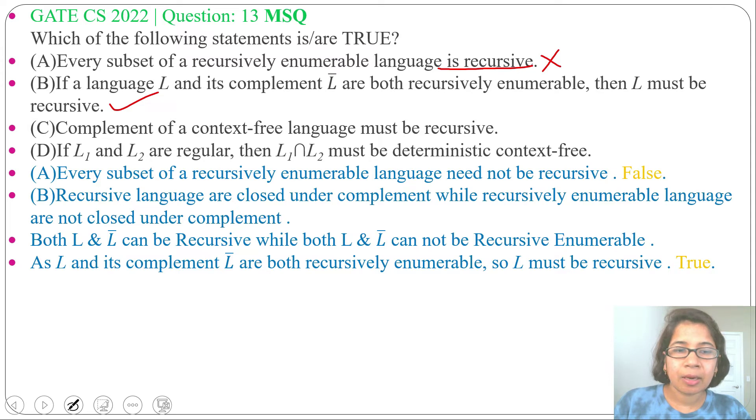Next, option C: complement of a context-free language must be recursive. Context-free languages are not closed under complement, so a context-free language's complement can be a context-sensitive language, and context-sensitive languages are a subset of recursive languages. So this is true.